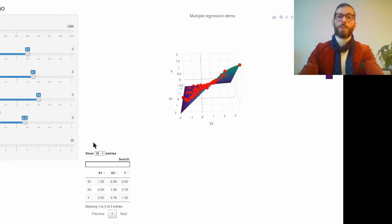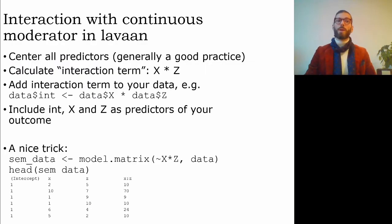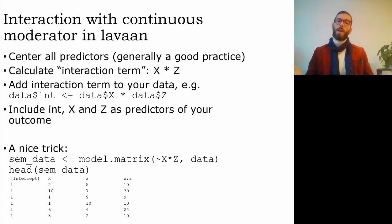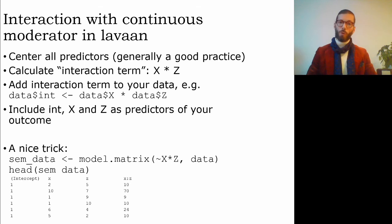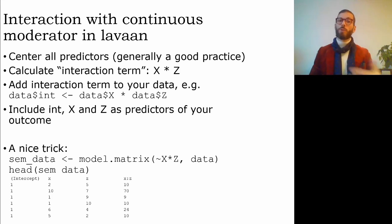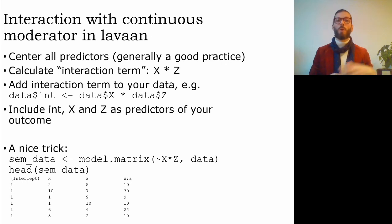To analyze an interaction with a continuous moderator in lavaan, it is good practice to center all predictors. Multiple regression tells you the effect of each predictor while keeping all other predictors constant at zero. If you don't center predictors, zero might be meaningless or fall outside the observed data range. If you center predictors, zero equals the mean, so regression coefficients tell you the effect of the first predictor at the average value of the second predictor.